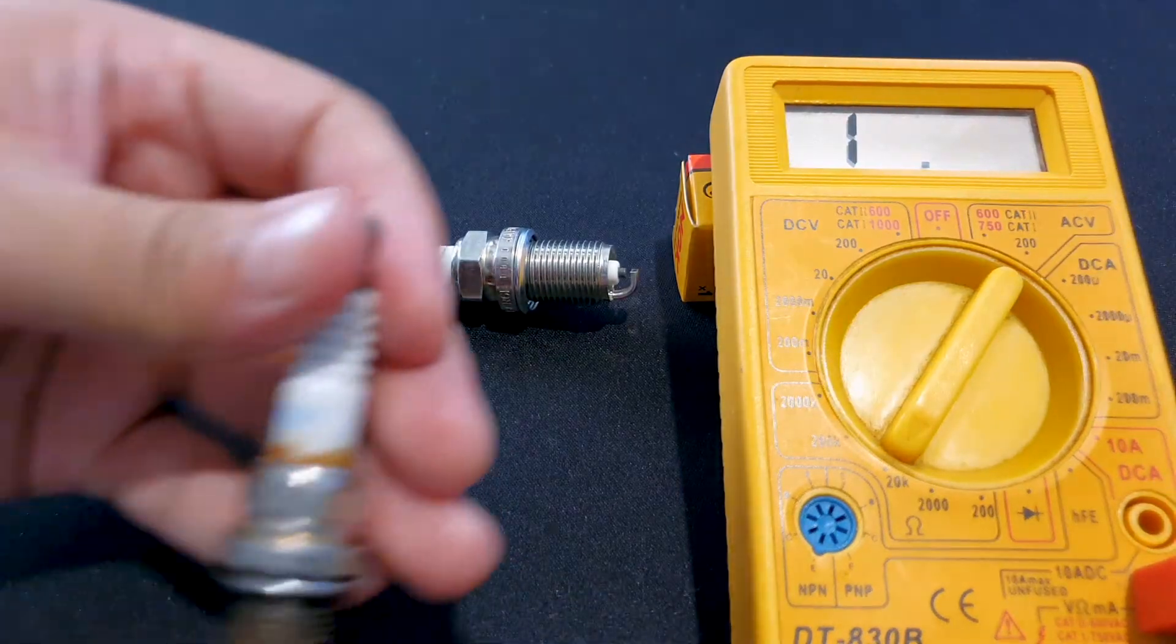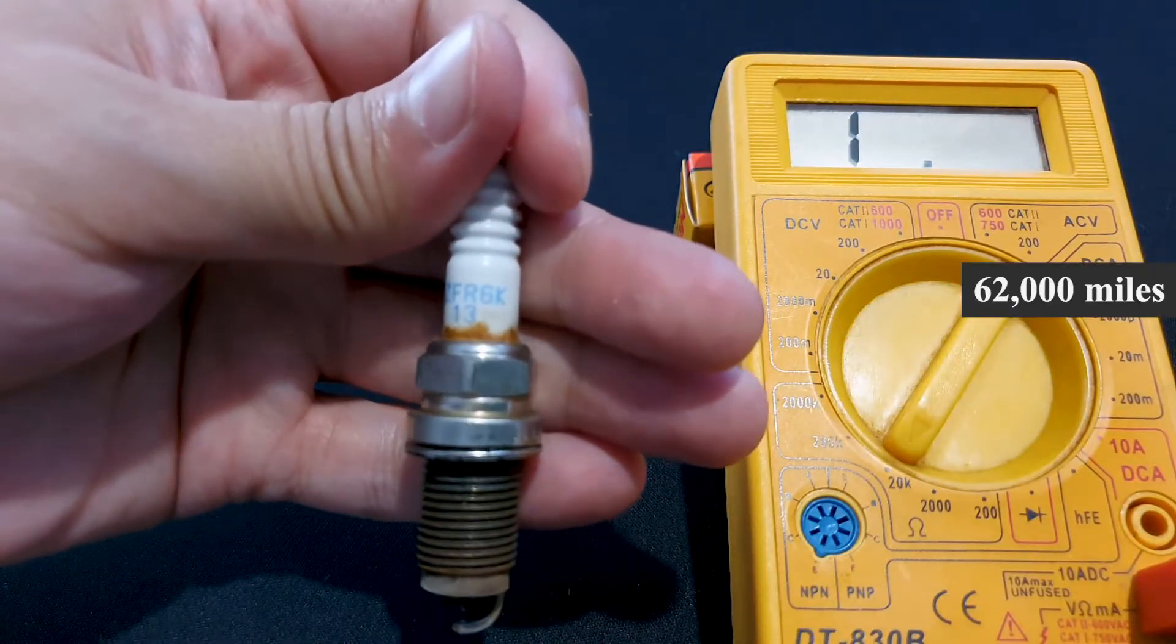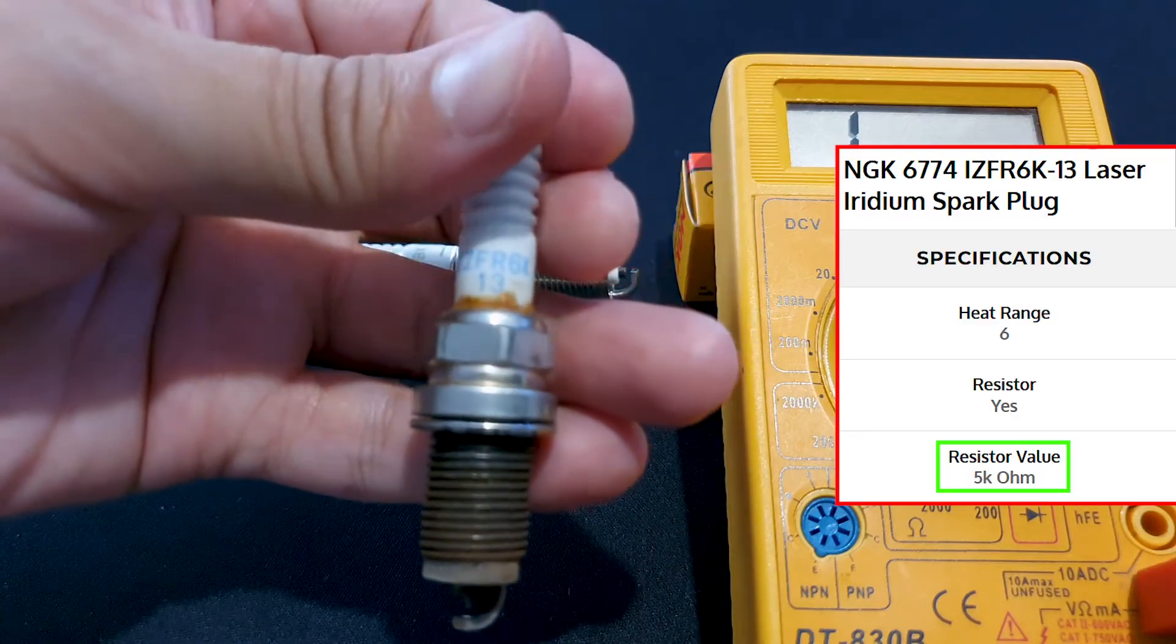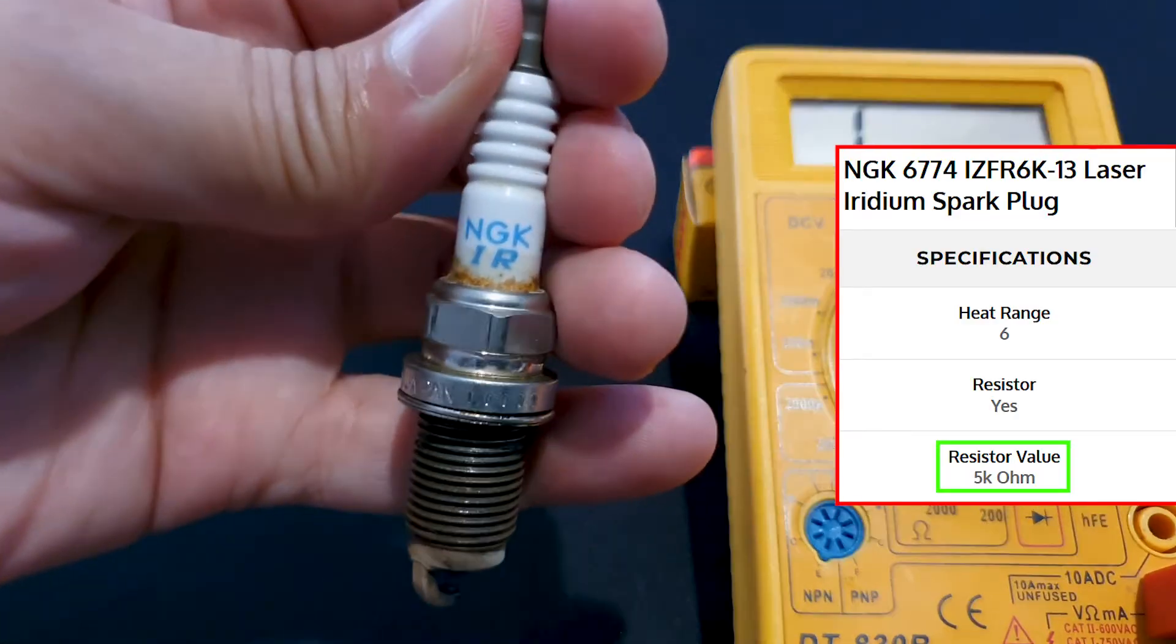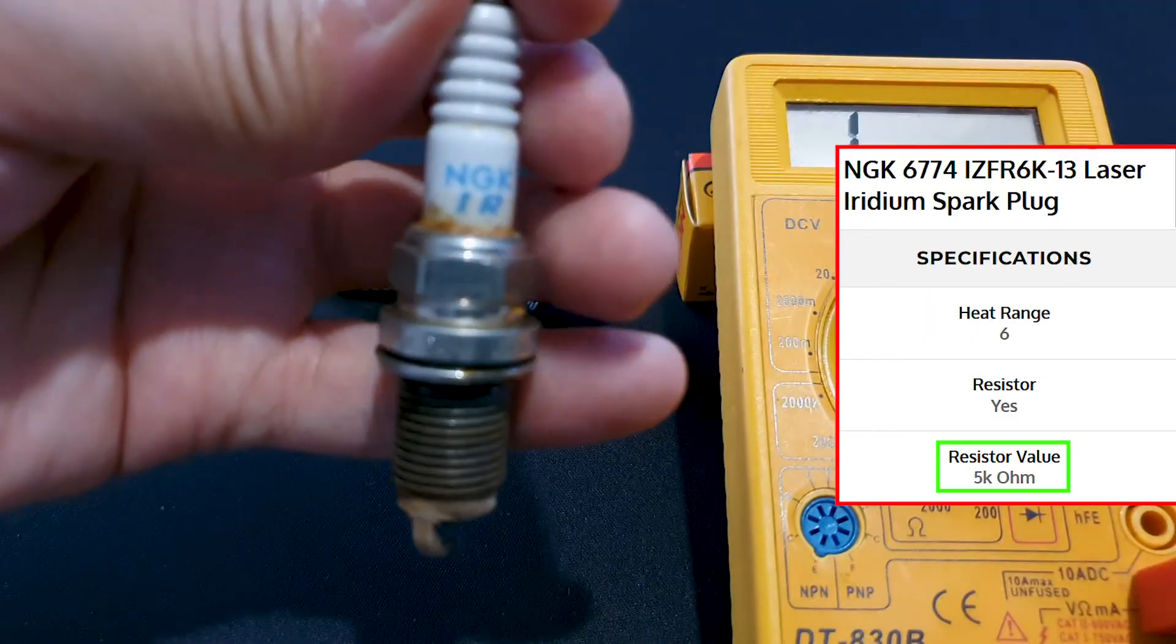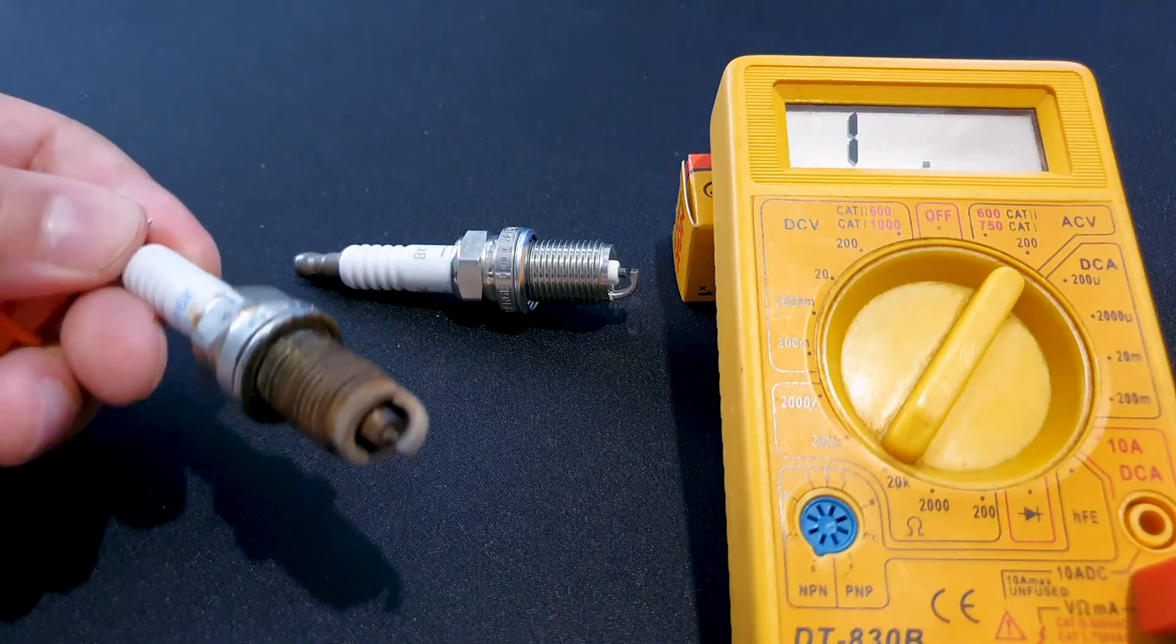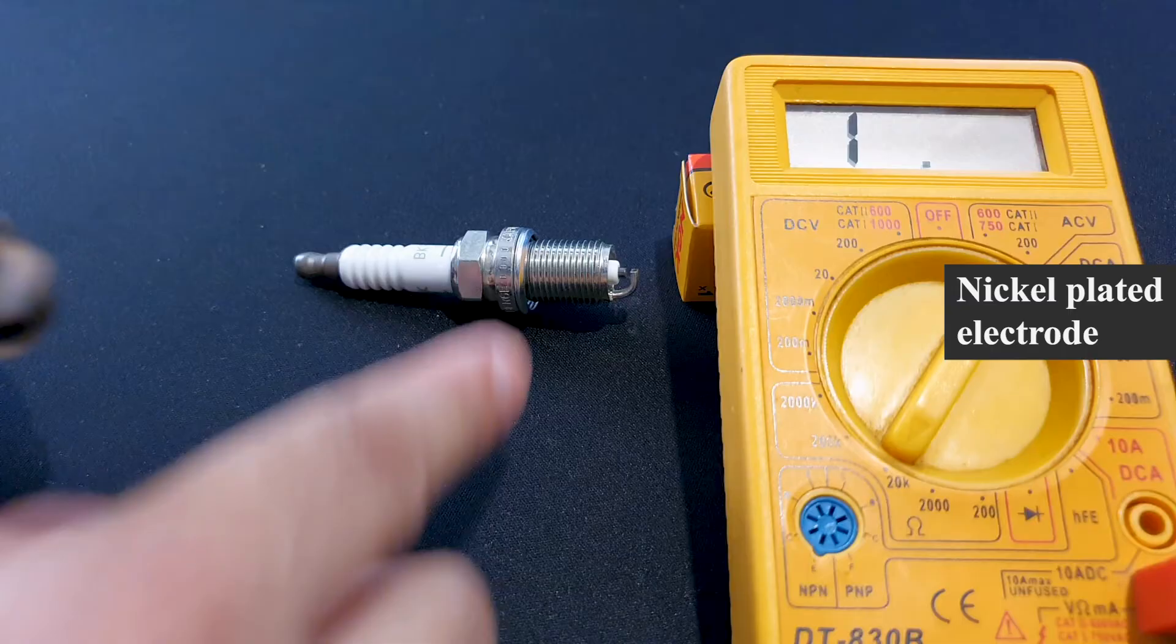Here I have a spark plug that has been used for 100,000 kilometers. You can see the part number here, and this is also used on the Honda Fit Jazz and City on VTEC engines. You can see 'R,' it is a resistor type plug. Let me test the resistance on this. Now this is an iridium tip, this one is a nickel tip.